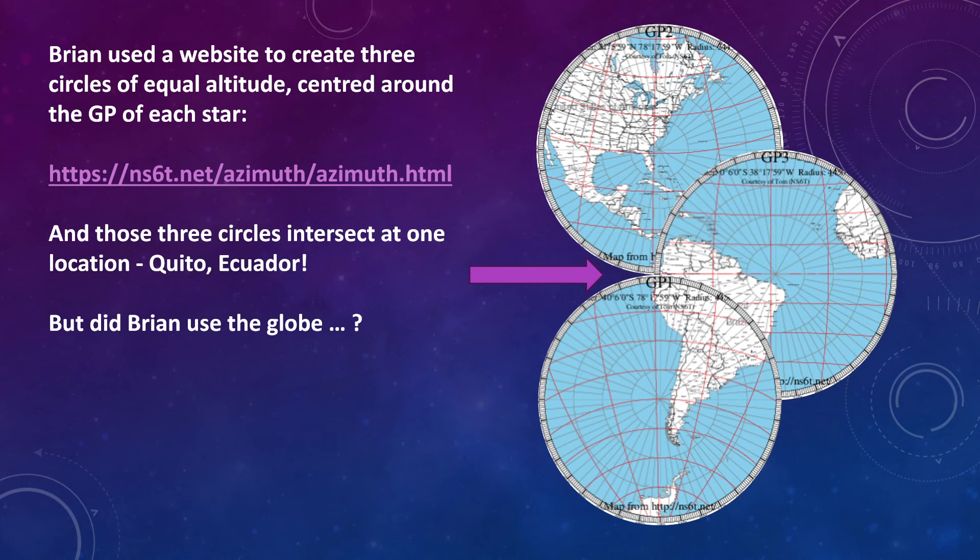So Brian published a video a few days ago with his solution. Now these GP's are entirely made up but that's fine, he's just demonstrating the method. His method was to use a website called ns6t.net that allows you to create an AE map centered on the GP of each star and each map has a given radius which corresponds to the circle of equal altitude. When he combines all three of these maps you'll see that they share a common point around Quito Ecuador and that was the position fix in Brian's hypothetical.